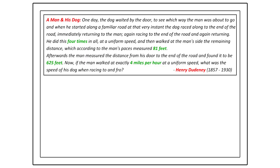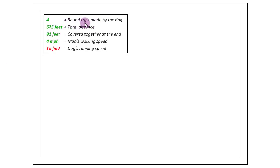Let us start by summarizing the data given to us. So the dog is making four round trips. The total distance is 625 feet. The last 81 feet are covered by the man and his dog together. The man walks at 4 miles per hour and we have to figure out the dog's running speed.